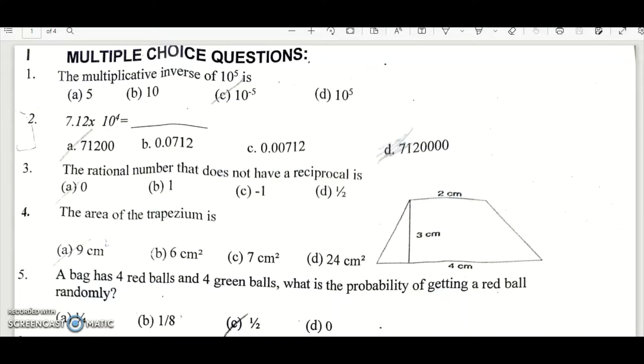Question number 4, the area of a trapezium is 9 centimeters. The formula for area is A plus B by 2 H. So here what is A? A is 2 centimeters, B is 4 centimeters. 4 plus 2 is 6 by 2 into H is 3 centimeters. So this is cancel 3. So 3 into 3 equal to 9. So the area of trapezium is 9 centimeters.